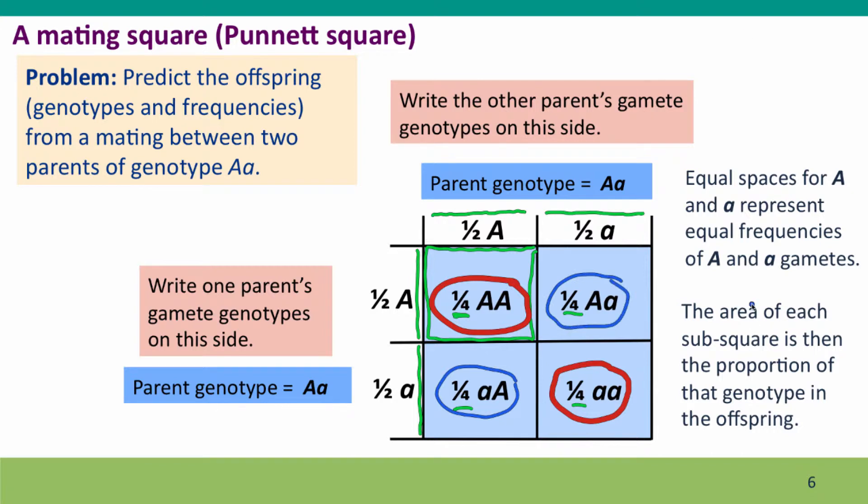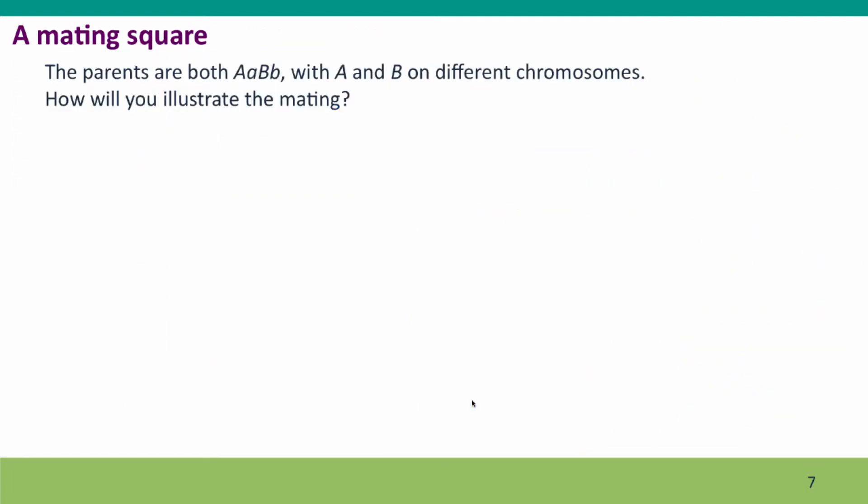So we can write out the results of the cross as one quarter big A, big A, one quarter little a, little a, and one half big A, little a. Now, here I've got big A, little a. Here I've got little a, big A. Those are the same genotype. Okay, that was a simple problem.